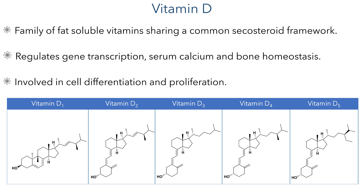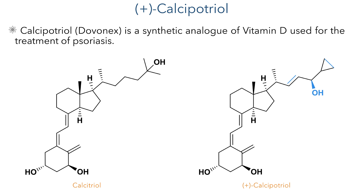Vitamin D is a family of fat-soluble vitamins that share a common secosteroid framework. They have a number of functions within the body including the regulation of gene transcription, serum calcium levels and bone homeostasis. They are also highly involved in cell differentiation and proliferation and in the function of the immune system. Calcipotriol, which is sold under the name Dovinex, is a synthetic analog of vitamin D and is used for the treatment of psoriasis.